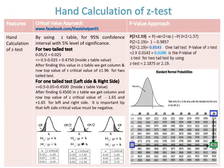After finding 0.4750 in the z-table, we get the z critical value of plus or minus 1.96 for the two-tailed test. For the one-tailed test on the left and right sides, subtract 0.05 from 0.5 to get 0.4500, which is the inside z-table value. After finding 0.4500 in the z-table, we get z critical values of minus 1.65 and plus 1.65 for the left and right sides. An important tip: the left side critical value must always be negative.